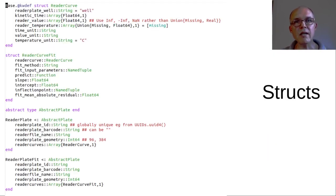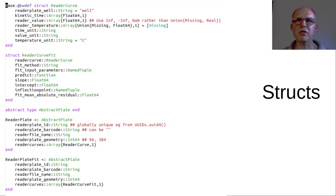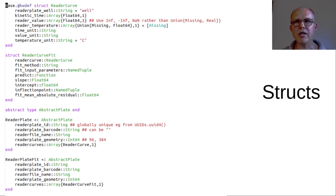In R, I like working with flexible data frames, but they also tend to get a little messy and accumulate a lot of columns of intermediate results. So in Julia, I'm happy to have the structs, which are more clean. Here I have structs of a reader curve, a fitted reader curve, a plate of reader curves, and even a run of plates of reader curves.